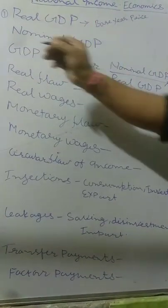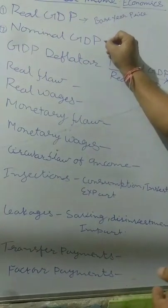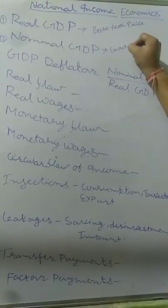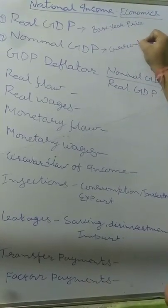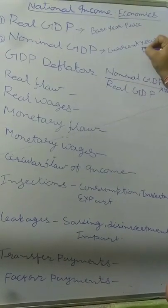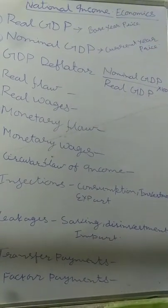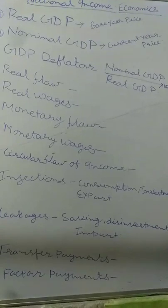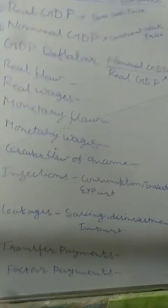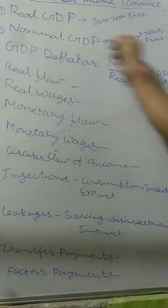Second, Nominal GDP. When we calculate GDP at current year prices, then it is called Nominal GDP.